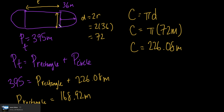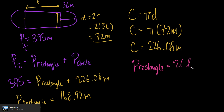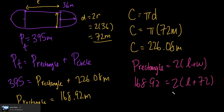We don't know the length of the rectangle, but we do know the width. The width equals the diameter of the circle, which is 72 meters, because the full circle spans from one side to the other. The perimeter of a rectangle equals 2 times l plus 2 times w, so: 168.92 = 2l + 2(72).